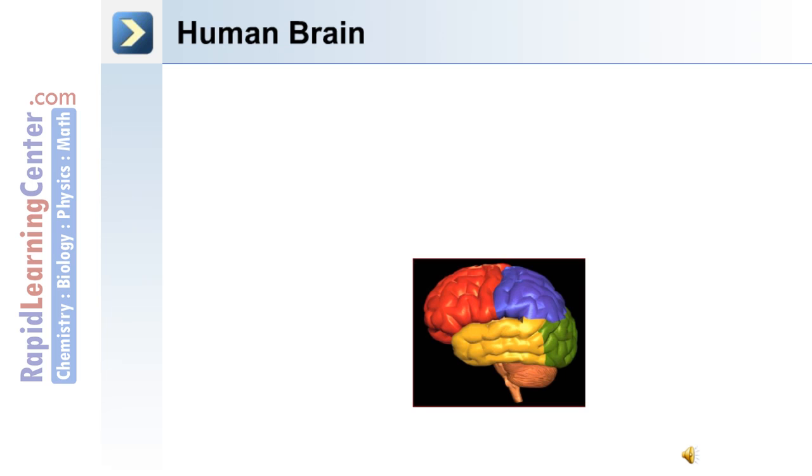This image depicts the brain in a lateral view. The lobes of the human brain are the frontal lobe, the parietal lobe, the occipital lobe, and the temporal lobe.